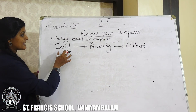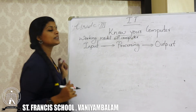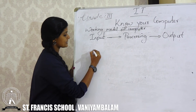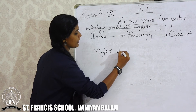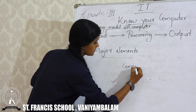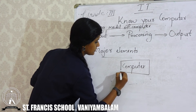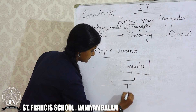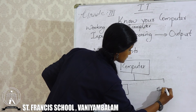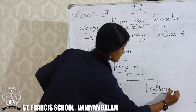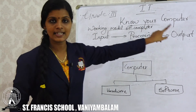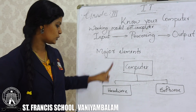After writing the working model, you can explain what is input, what is processing and what is output with an example. The next topic you want to write is 'Major Elements of Computer'. Draw a diagram showing two branches — Hardware and Software. So write: Working Model (Input, Processing, Output), then Major Elements of Computer (Hardware and Software).